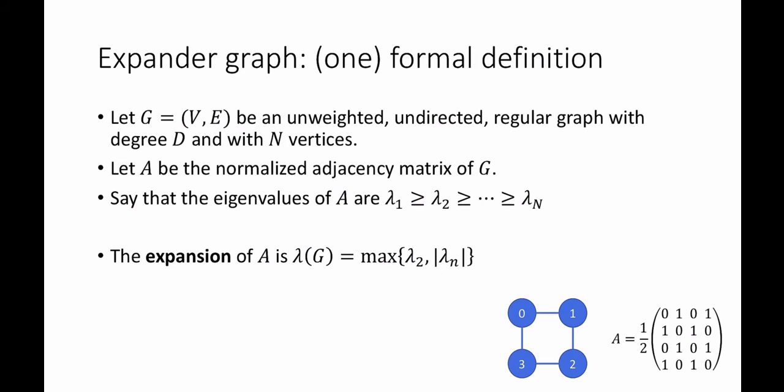So we say that G is an expander graph with expansion lambda, where lambda is equal to this. And informally, we'll just say that G is an expander, or a spectral expander, if lambda of G is kind of small compared to lambda 1.